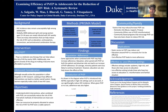Good evening, everyone. My name is Anthony Salgado, and I am an intern at the Duke-Margolis Center for Health Policy. This is my first year. Today, we'll be examining the efficiency of PrEP in adolescents for the reduction of HIV risk, and my primary mentors for this project were Wenwei Mao and Nipchita Barali.